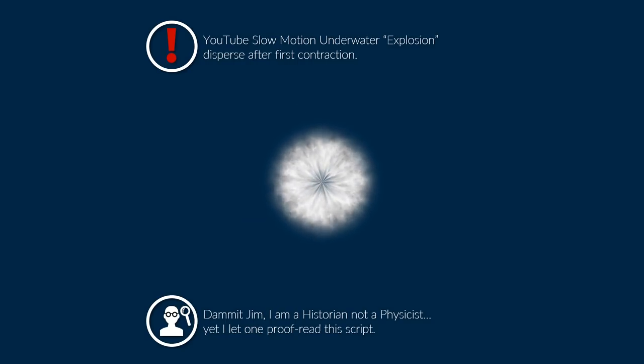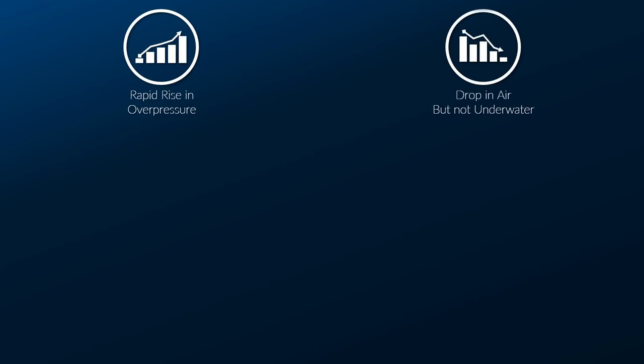Now what are some differences of an underwater explosion to an explosion in the air? In both air and water, there is a rapid rise in overpressure at the shock front. Yet in an air explosion, this overpressure drops rapidly.